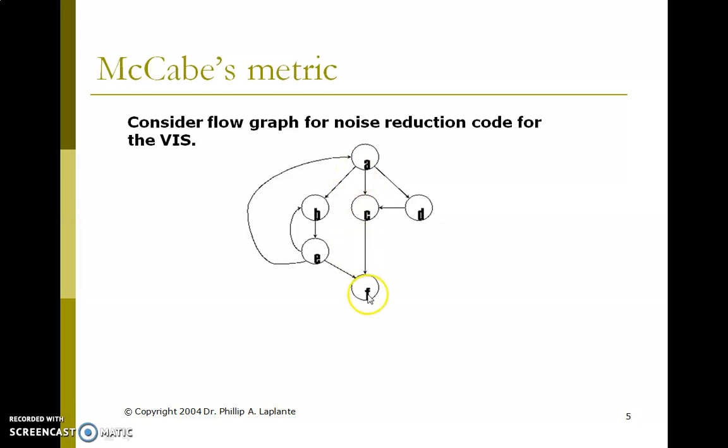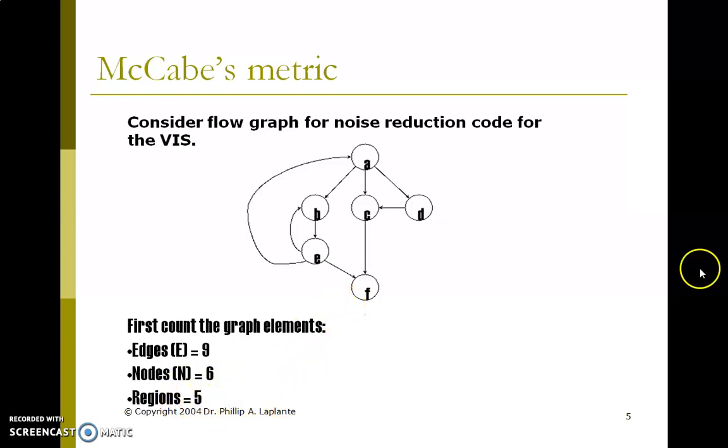First, count the graph elements: edges e equals 9 and nodes n equals 6, and regions equal 5. Then calculate v(g) equals e minus n plus 2. So e equals 9 minus n equals 6, which equals 5.